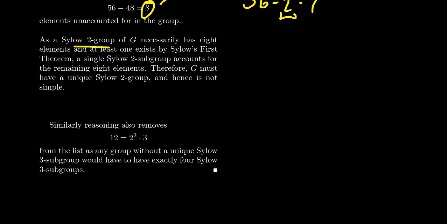A unique Sylow subgroup is always normal and therefore no group of order 56 can be simple. It's not possible because your 2 group or your 7 Sylow subgroup will be unique.